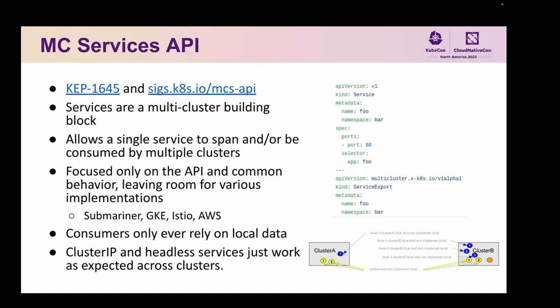We decided to start by asking ourselves: what are the core problems in multi-cluster service discovery, and how might we extend the existing service concept across clusters, really targeting that high-trust east-west case? What we came up with was a very simple API called a ServiceExport. The responsibility of an implementation is to figure out the actuation, but the idea is that by creating a ServiceExport resource — which is really just a resource name mapped to a service — we allow a single Kubernetes service to span or be consumed by multiple clusters.